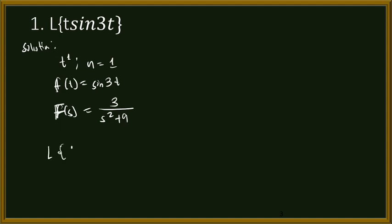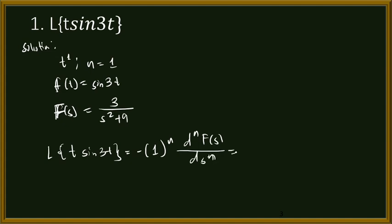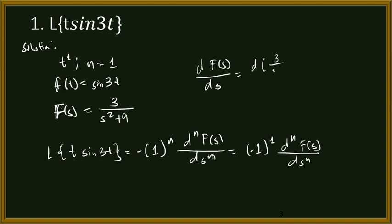So the Laplace transform of t sine 3t equals negative 1 to the power of n, times d to the n of F of s over d s to the n. Substituting n equals 1, we have negative 1 raised to the power of 1, then we need the first derivative of F of s. The first derivative of 3 over s squared plus 9 is negative 3 times 2s over s squared plus 9 squared, giving us negative 6s over s squared plus 9 squared.